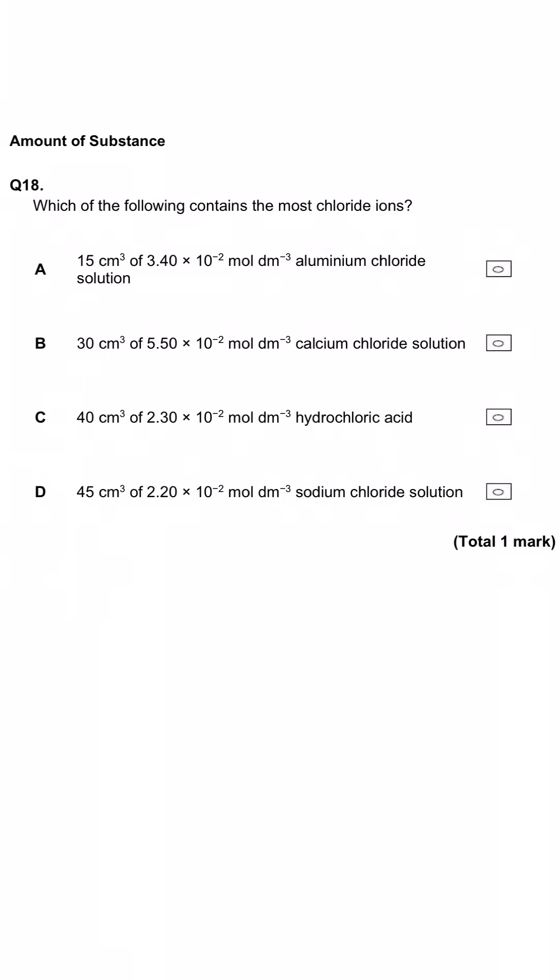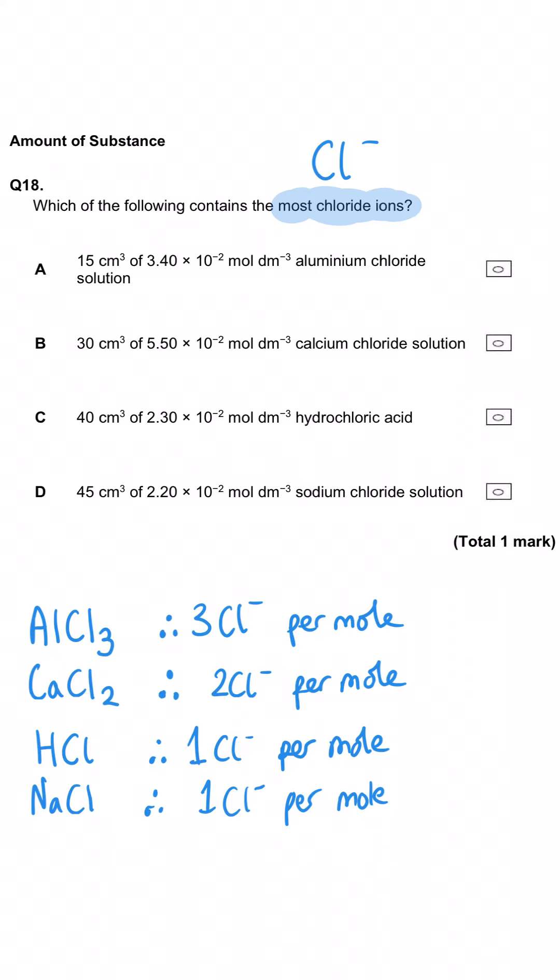In this question we're being asked which of the following contains the most chloride ions. To unpick this, I think we should first look at the formulae for these named compounds. Aluminium chloride is AlCl3, which means 3 chloride ions per mole. Calcium chloride is CaCl2, so 2 chloride ions per mole. Hydrochloric acid is HCl, 1 chloride ion per mole, and sodium chloride NaCl, also 1 chloride ion per mole. What we need to do is work out the number of moles of each substance and multiply by the number of chloride ions per mole, and look for the biggest number.